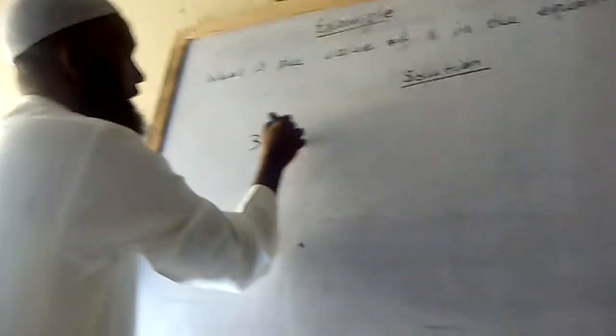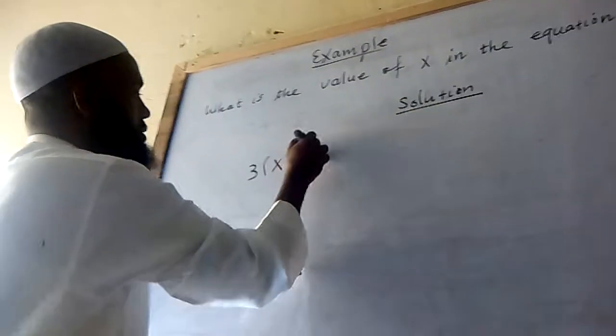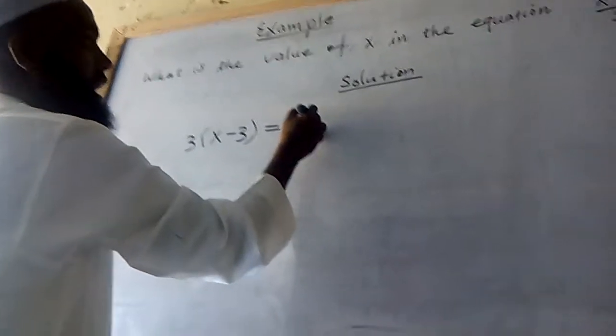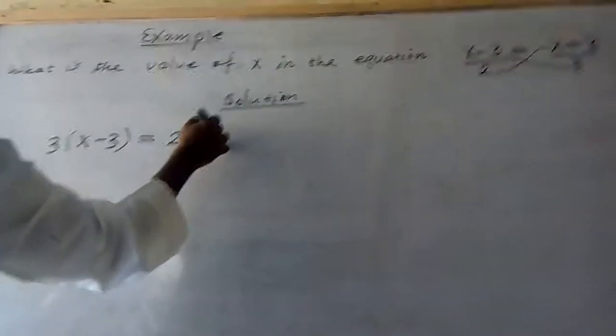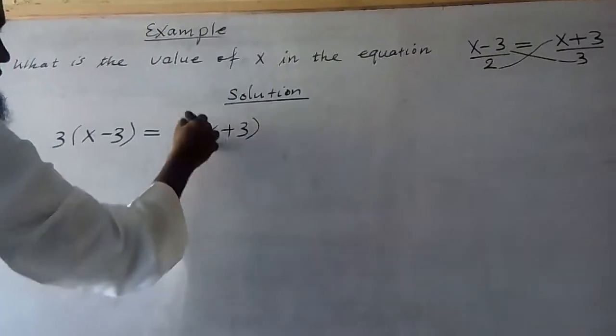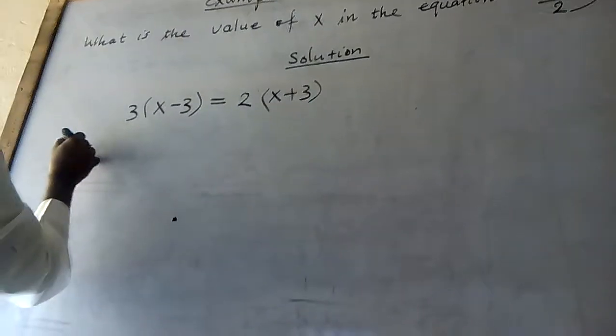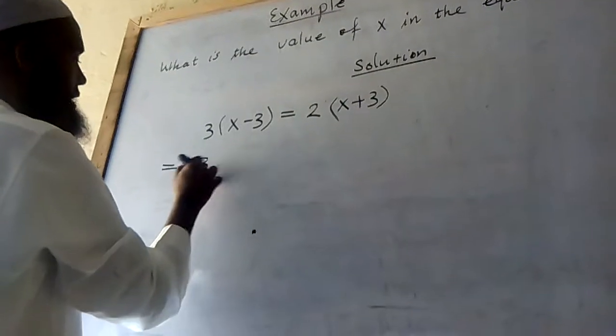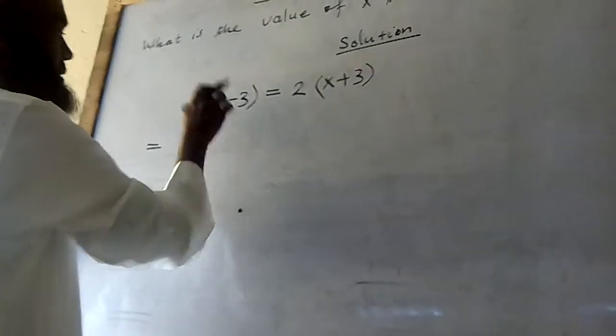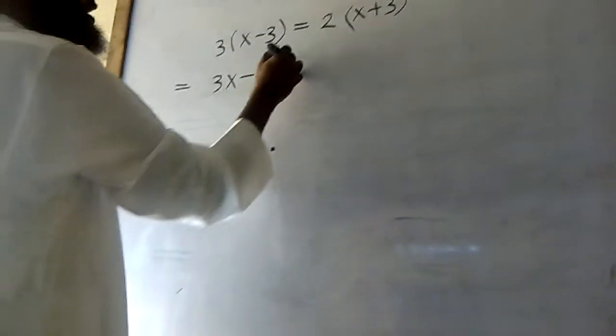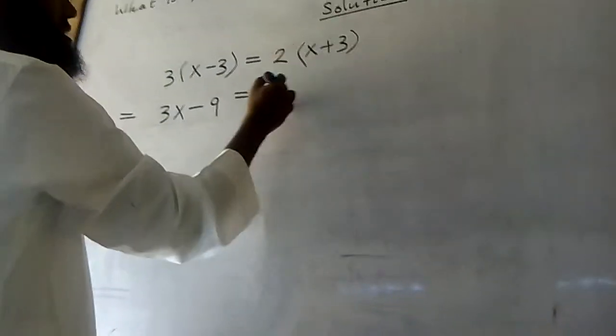Then we can say three times x is three x, three times minus three is minus nine, equals two times x is two x, two times three is six.